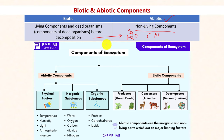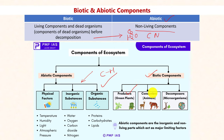Abiotic components are further divided into organic substances, which contain a carbon-hydrogen bond, and inorganic substances, which do not have a carbon-hydrogen bond. We also have physical factors like air, water, temperature, and atmospheric pressure, which are also included under abiotic components. For biotic components, we have producers (also called autotrophs), consumers (also called heterotrophs), and decomposers (also known as detritivores).